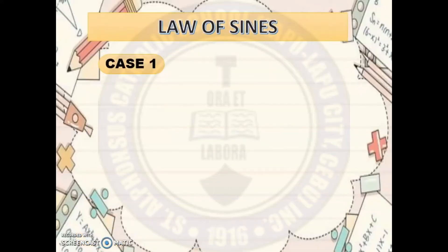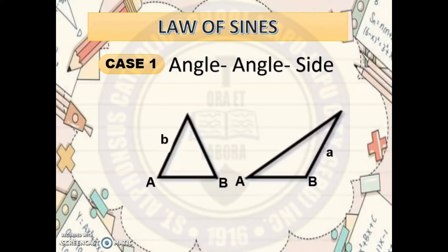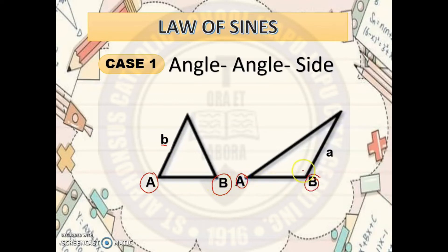Let's learn Case 1 first. Case 1 given is angle-angle-side. You will use the Law of Sines in solving Case 1. So if the given is two angles and one side, and that side is opposite to one of the angles, then we will use the Law of Sines. As you can see in the problem, given two angles and one side opposite to one of these angles — for both acute and obtuse triangles — we will use the Law of Sines.